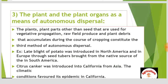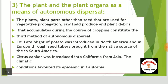The third method is plant and plant organs as a means of autonomous dispersal. Plants and plant parts other than seed used for vegetative propagation, raw field produce, and plant debris that accumulate during the course of cropping constitute this third method. Late blight of potato was introduced in North America and Europe through seed tubers brought from the native source in South America. Citrus canker was introduced into California from Asia, and the climatic conditions favored its epidemic there.